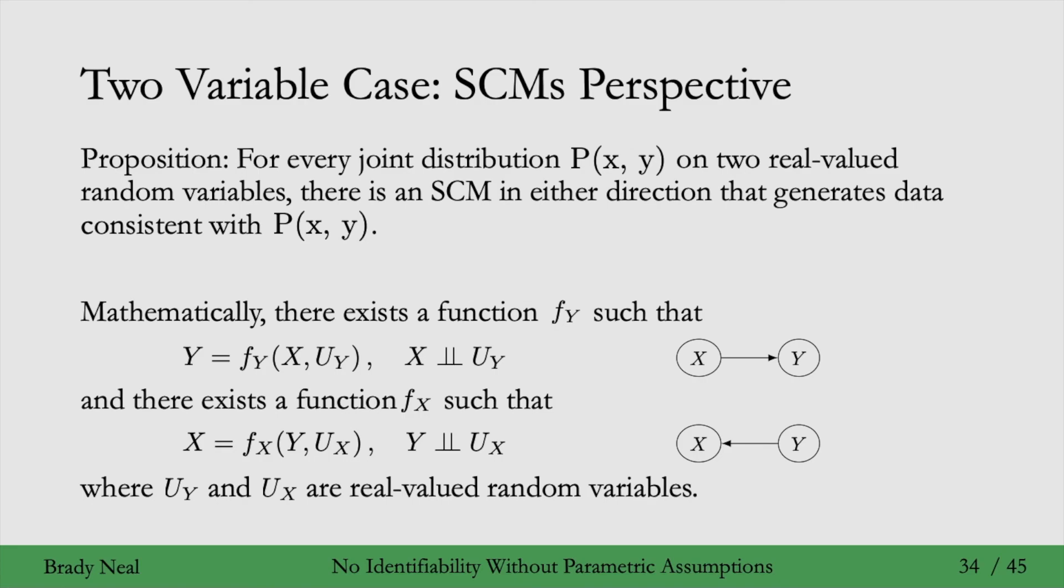So here we haven't made any restrictions on our SCMs. The SCMs can be whatever. And when that's the case, we are not able to identify the true causal graph. We can't distinguish between these two causal graphs to know which one is the true one. And in order to do that, we're going to need to make some assumptions about the parametric form.